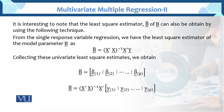It is interesting to note that the least square estimator b-hat of b can also be obtained by using the following technique. You should also know that in the least square estimate, the expected value of b-hat equals b — that is, b-hat is an unbiased estimator of b. Note that the least square estimator b-hat of b can be obtained by using the following technique from the single response variable regression: we have the least square estimator of the model parameter b.